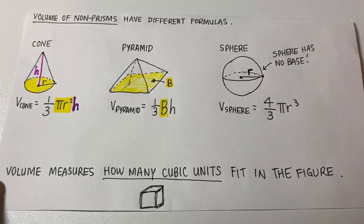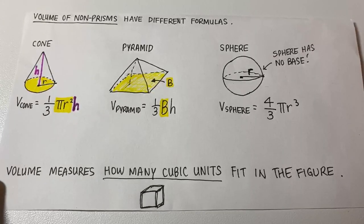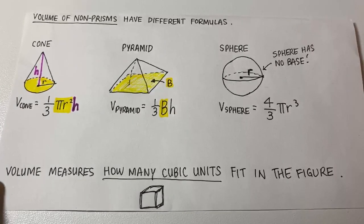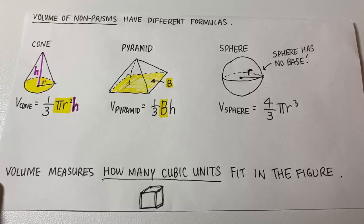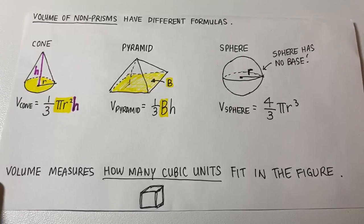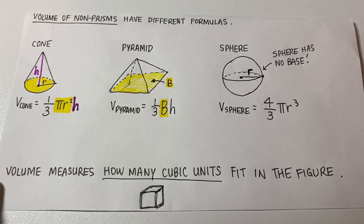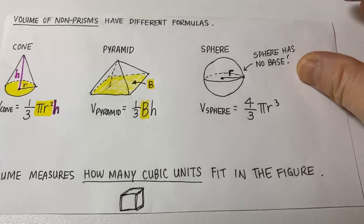Volume of a cone: one-third pi r squared times H. Volume, volume, volume.